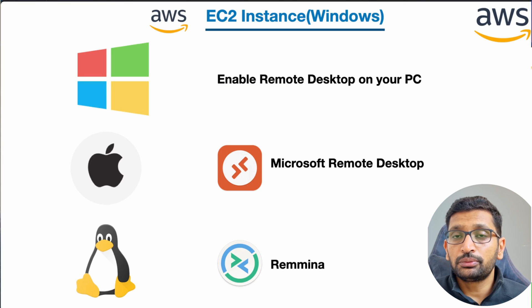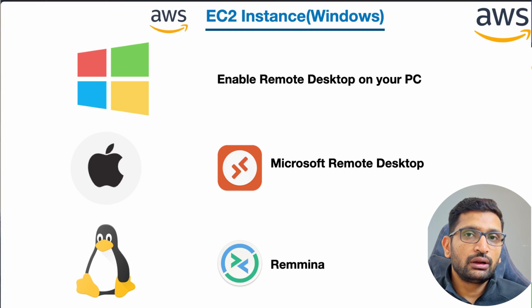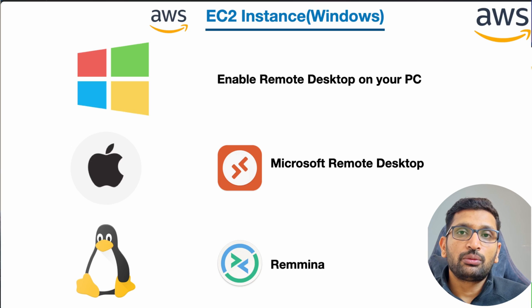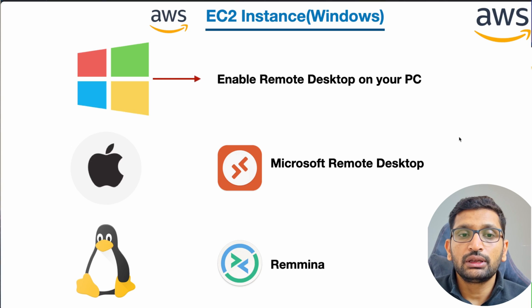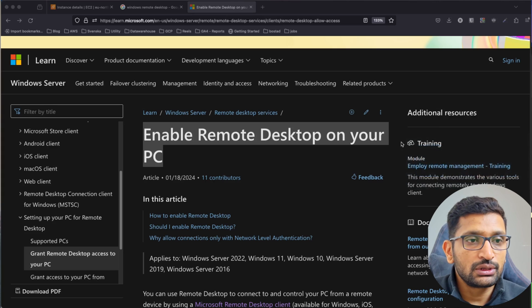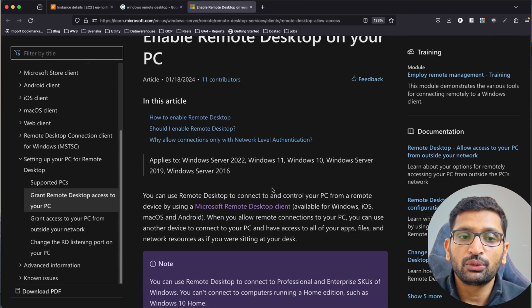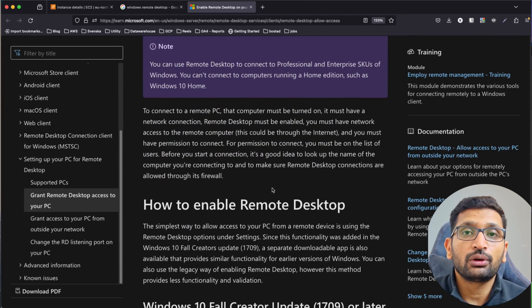After provisioning the Windows server on AWS, you need to know which RDP client to use. Generally there are three types of workstations: Windows, macOS, or Linux. If you're on Windows, enable the built-in Remote Desktop feature — I'll post the link in the description. For macOS, use the Microsoft Remote Desktop client. For Linux distros like Ubuntu, Fedora, or CentOS, I recommend Remmina RDP client, which works similarly to Microsoft Remote Desktop on macOS.